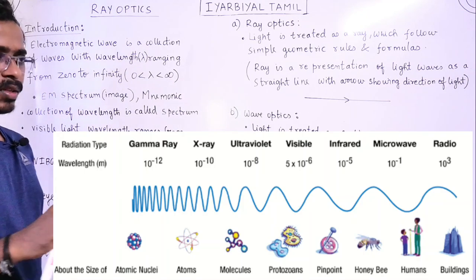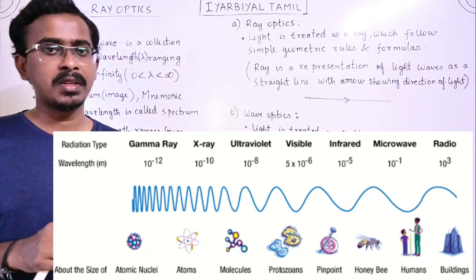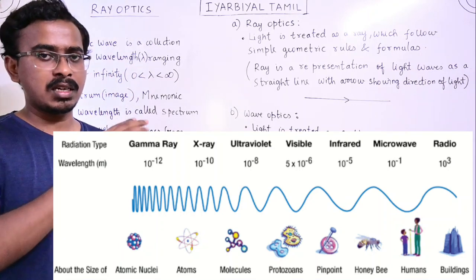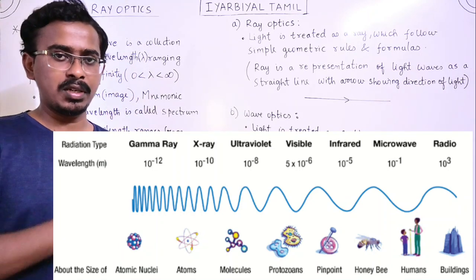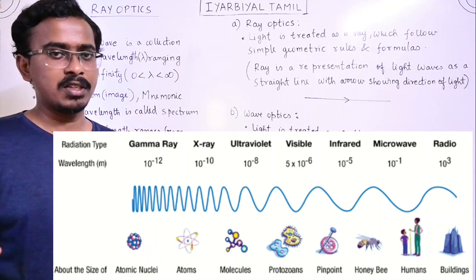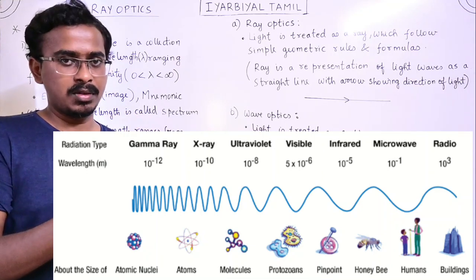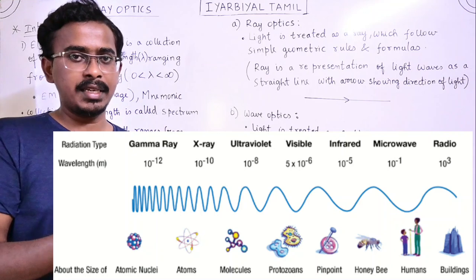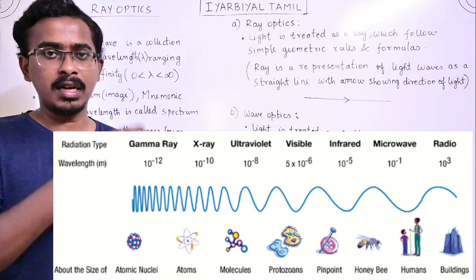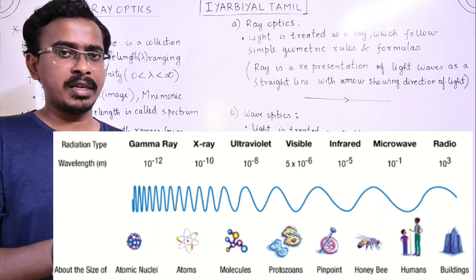This entire collection is called the Electromagnetic Spectrum, as you can see on the screen. There are all wavelengths from 0 to infinity, including Gamma Rays, X-Rays, Ultraviolet, and others.